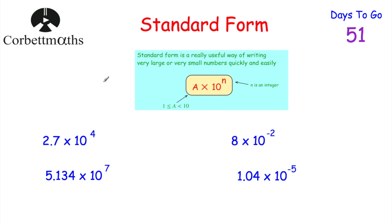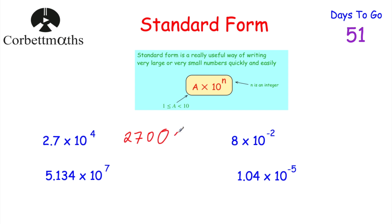We've looked at how to write ordinary numbers in standard form. Now let's look at writing numbers in standard form as ordinary numbers — writing them out in full. Feel free to pause and try these yourself. Starting with 2.7 × 10⁴: we move the digits four columns to the left — 27, 270, 2,700, 27,000. So 2.7 × 10⁴ = 27,000.